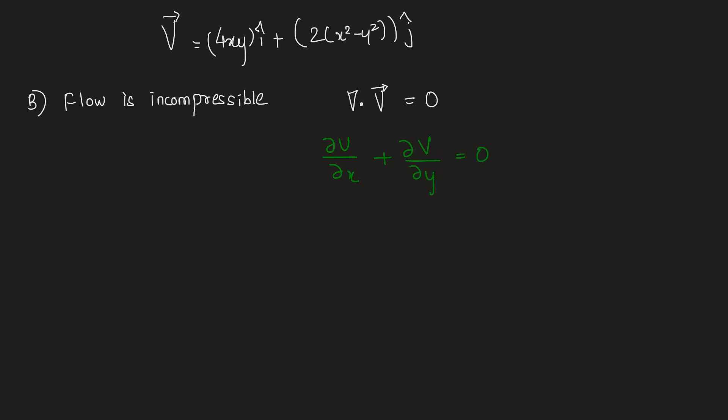When we take partial derivative of u with respect to x, we get 4y. Plus, when we take partial derivative of v with respect to y, we get minus 4y since x squared is constant with derivative zero, and minus y squared derivative is minus 2y. This equals 4y minus 4y, which is zero, and therefore this statement is correct, so flow is incompressible.